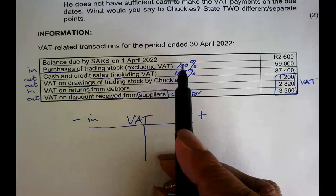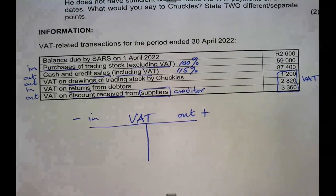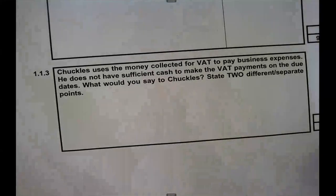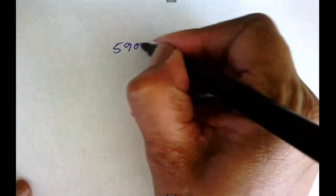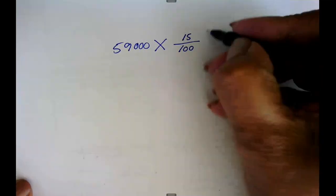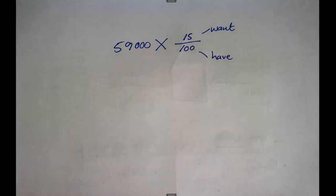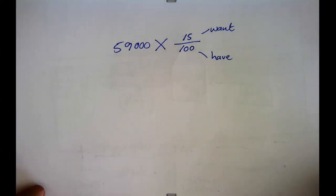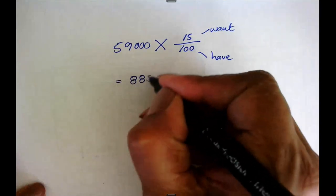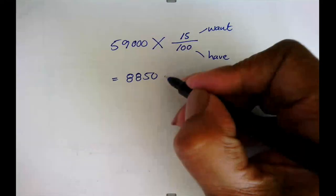Let's do the calculations. The first amount is 59,000 — that is 100% because it is VAT exclusive. I want the 15%, so 59,000 × 15% = 8,850. Let me verify: 59,000 times 15% is indeed 8,850. So that amount is correct.